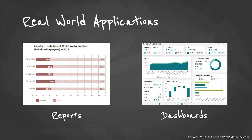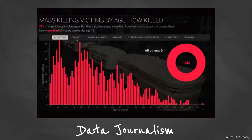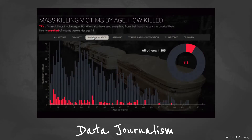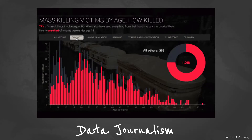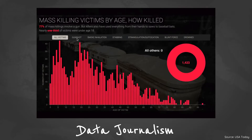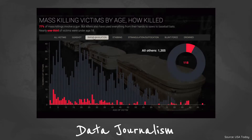Now, let's look at some real world applications. For example, in the MTR CSR report, they use data viz to show the gender distribution of the workforce by location. Also, in some companies, they use dashboards to show an overview of sales performance. Also, journalists tell stories through engaging infographics. This is called data journalism.